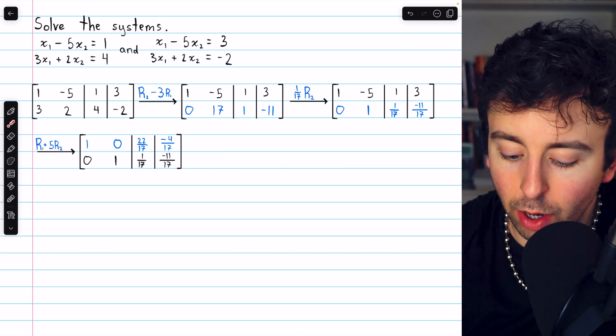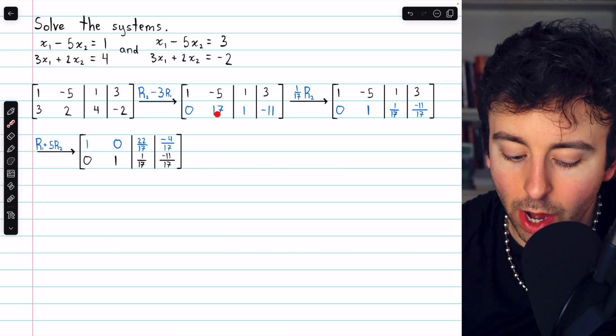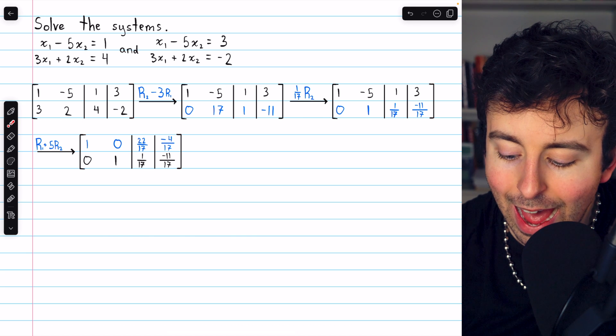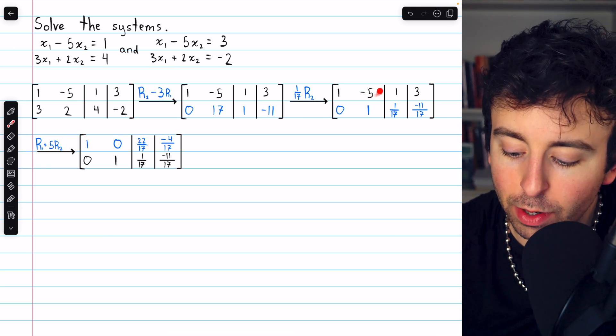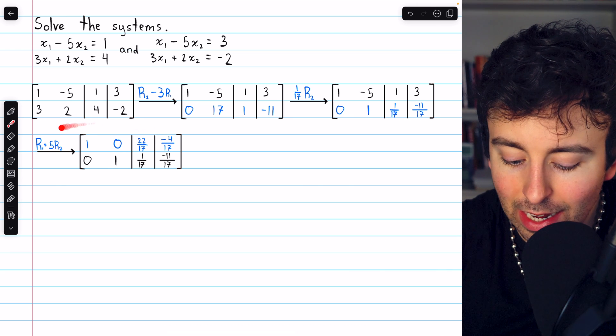Then we multiply row 2 by 1 over 17 to make that a 1. And then we add five copies of row 2 to row 1 in order to get rid of that negative 5. And then here we are.